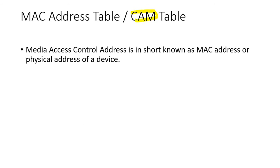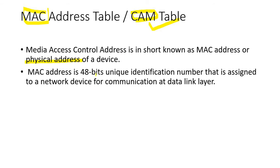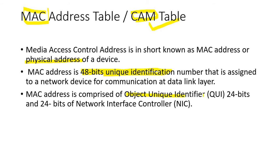First of all, what exactly is a CAM? CAM is nothing but a content addressable memory. Before starting that, we should know about the MAC — what exactly the MAC is. MAC is nothing but media access control, which is also known as the physical address of a device. For example, you might have a PC, a laptop, or a mobile phone — every device has a MAC address. MAC addresses have 48 bits, and these 48 bits are split into an object unique identifier having 24 bits and 24 bits for the NIC, that is the network interface controller.